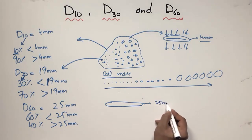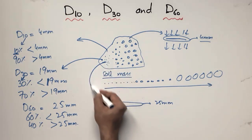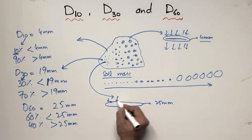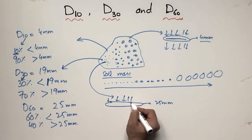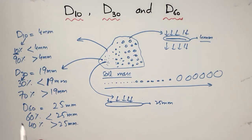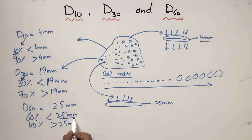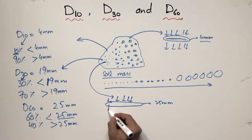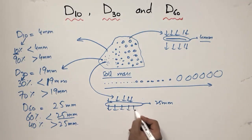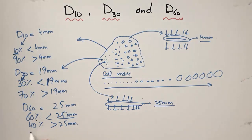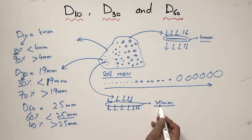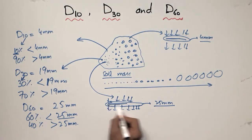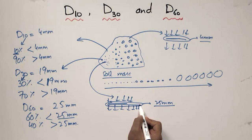Using the sieve analogy again: if I place the soil sample into a sieve of 25 millimeters, 60 percent of the particles will pass through the sieve, while the 40 percent of the soil sample with particles greater than 25 millimeters will be retained on the sieve and not pass through.